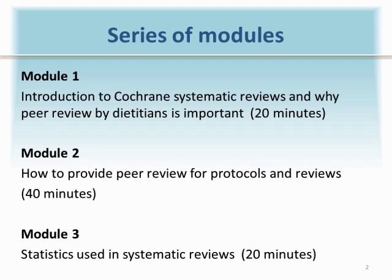There are three modules which provide basic and more advanced training on how you, as a dietitian, can provide feedback about Cochrane systematic reviews before they are published. The first module provides an introduction to Cochrane systematic reviews and why peer review is important. The second module describes how you can provide peer review or feedback, and the third module gives more information about the statistics typically used in systematic reviews.